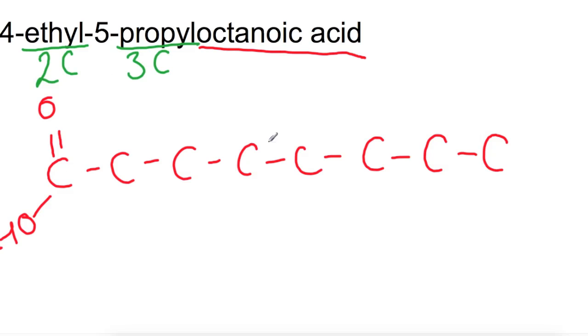So the propyl branch is on number 5. So we've got 1, 2, 3, 4, 5. And for ease, I'm going to write this as shortened. So we're going to have C3H7. On the fourth carbon, we also have an ethyl branch that's C2H5. You would then go in and fill in the rest of the hydrogens, ensuring everything has four bonds around it.